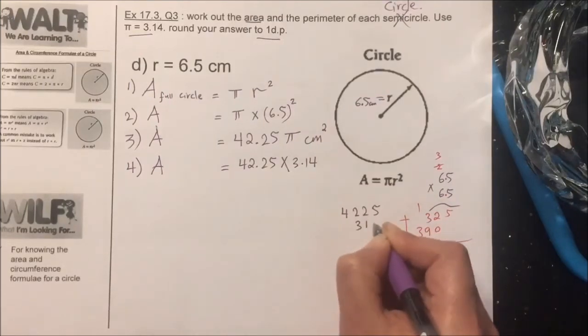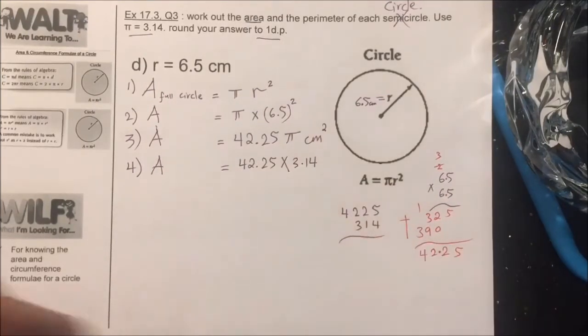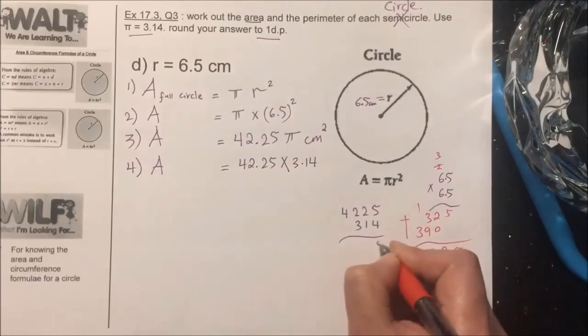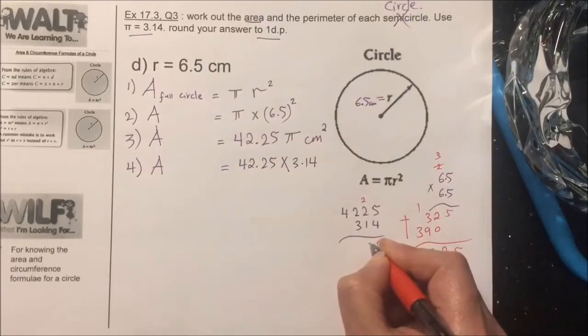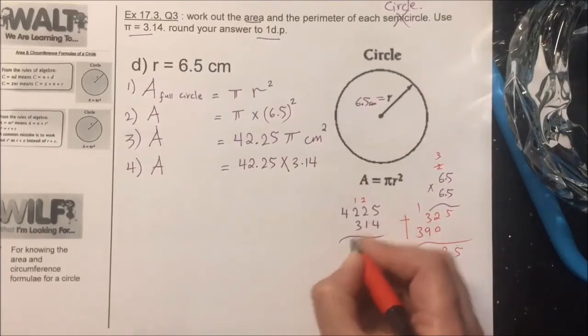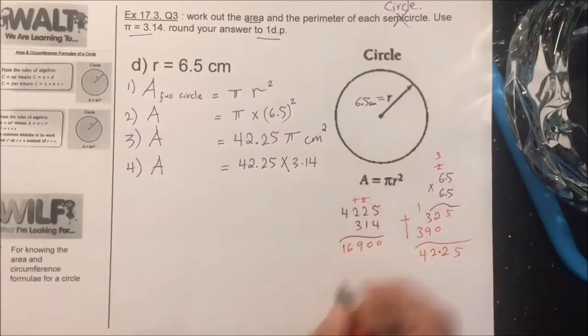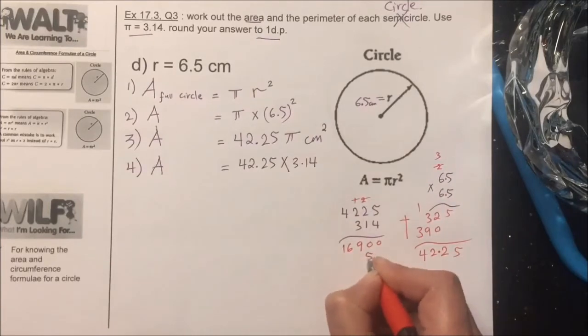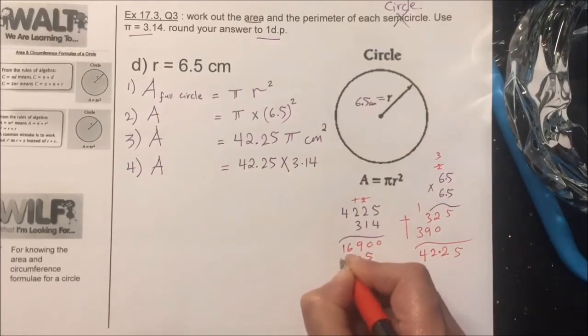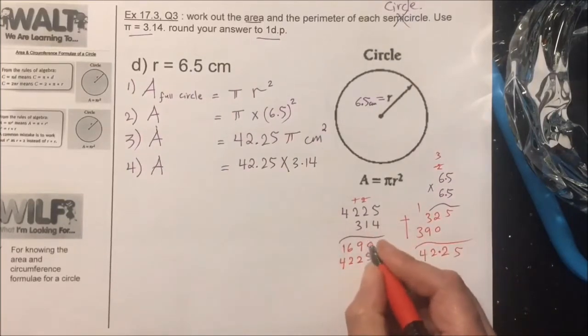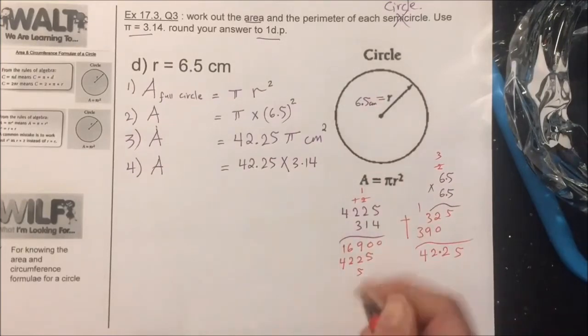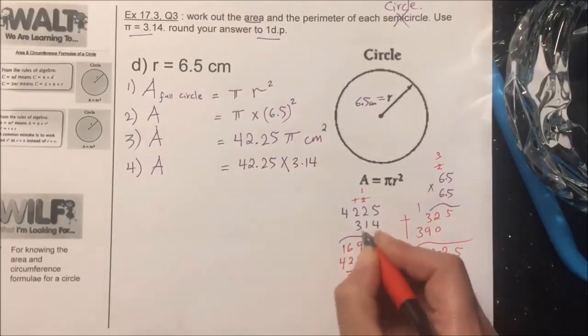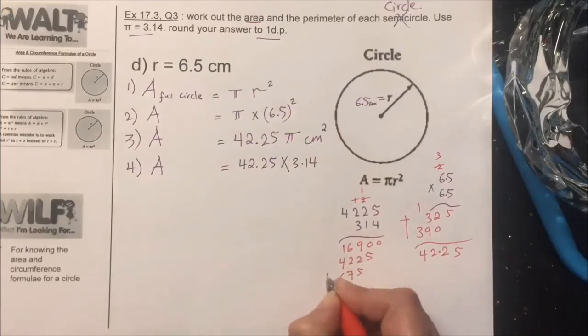Four times five is 20. Four times two is 8 plus 2 is 10. Four times two is 8 plus 1 is 9. Four times four is 16. Cross them out. One times five is 5. One times two is 2. One times two is 2. One times 4 is 4. Three times 5 is 15. Three times 2 is 6 plus 1 is 7. Three times 2 is 6 and 3 times 4 is 12.